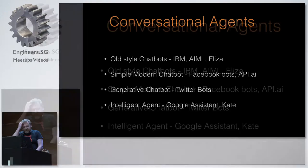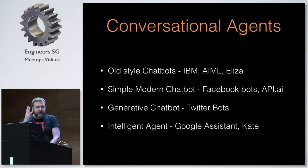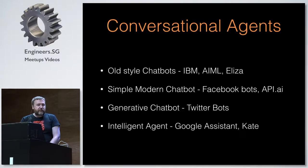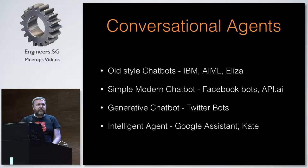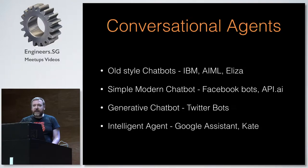I'm going to propose that there are four key types of conversational agents. You may recognize some of these, you may not. The first type is what we call the old-style chatbots. These are generally made with a language called AIML. Has anyone played with AIML?